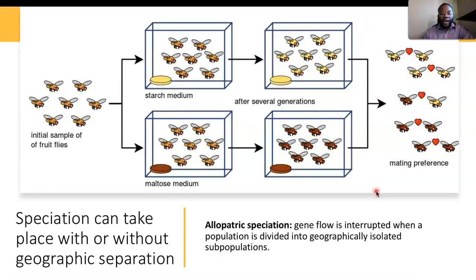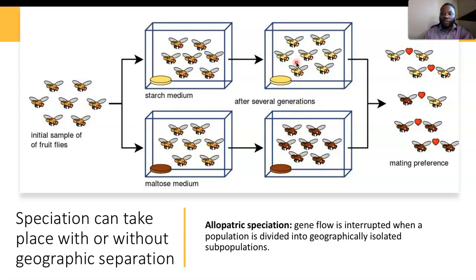Let's go further into speciation and how it can take place with or without geographical separation. Allopatric speciation is the definition for gene flow that is interrupted when a population is divided into geographically isolated subpopulations. With the Drosophila melanogaster experiment, an initial sample of fruit flies was separated into two populations with different diets — starch medium versus maltose medium — and after several generations, a mating preference arose among the different Drosophila, demonstrating reproductive isolation within allopatric speciation.